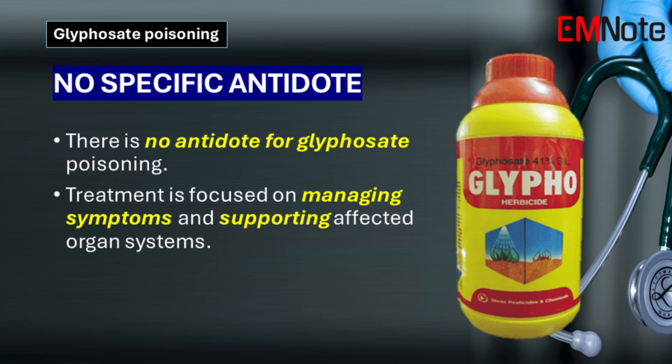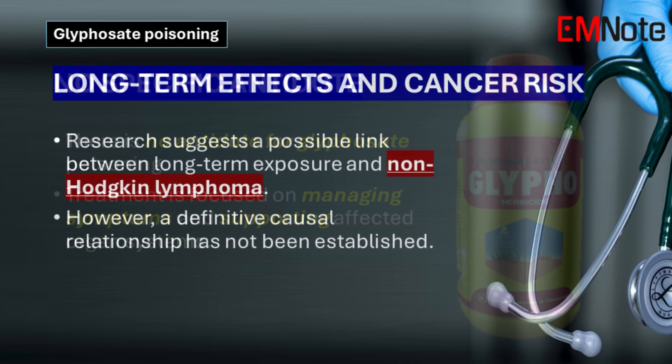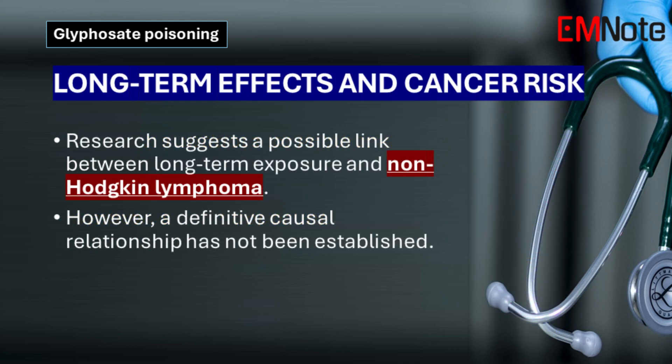Currently, no specific antidote exists for glyphosate poisoning. Management revolves around addressing the presenting symptoms and supporting affected organ systems. The link between long-term glyphosate exposure and cancer, particularly non-Hodgkin lymphoma, remains a subject of ongoing research and debate. While some studies suggest a potential association, a definitive causal relationship has not been established.